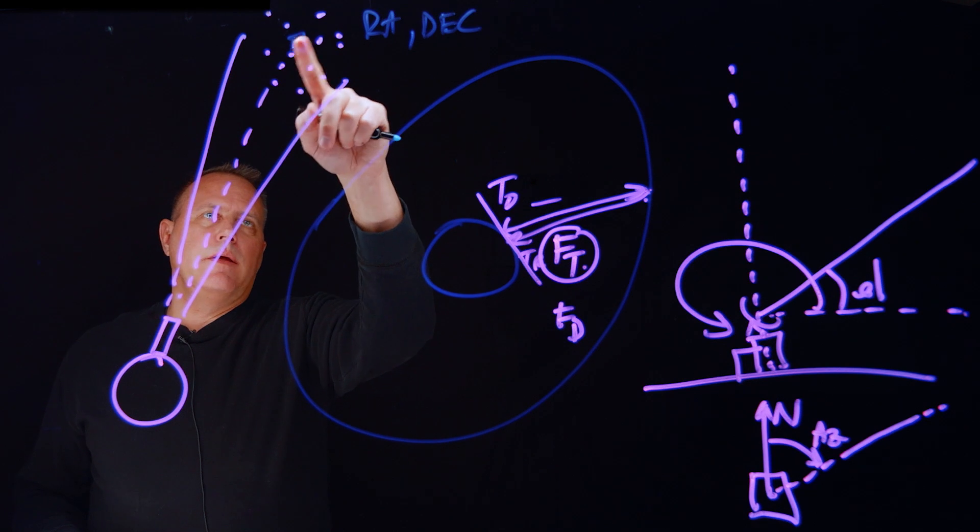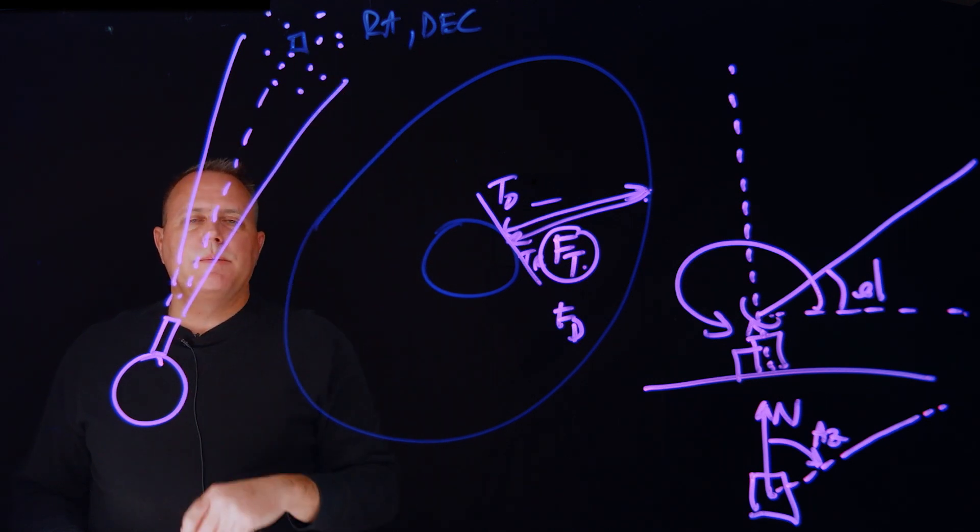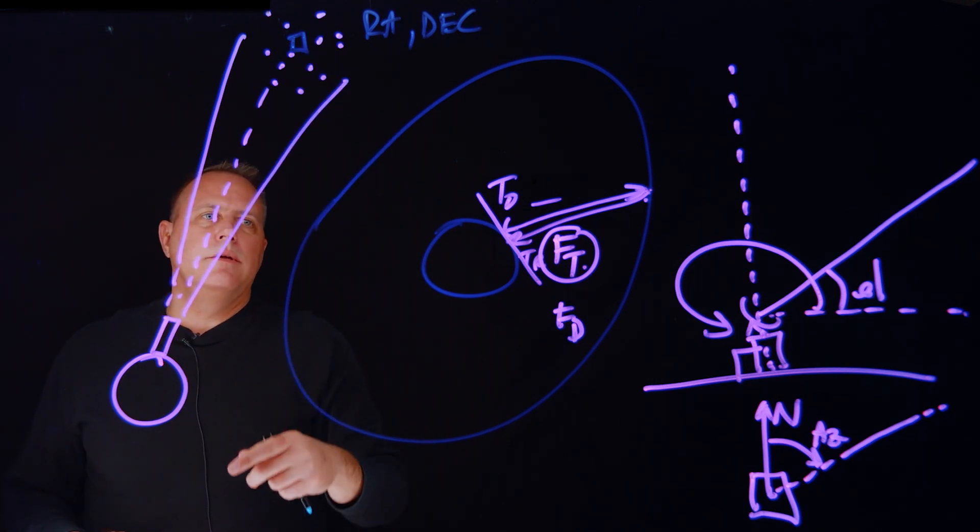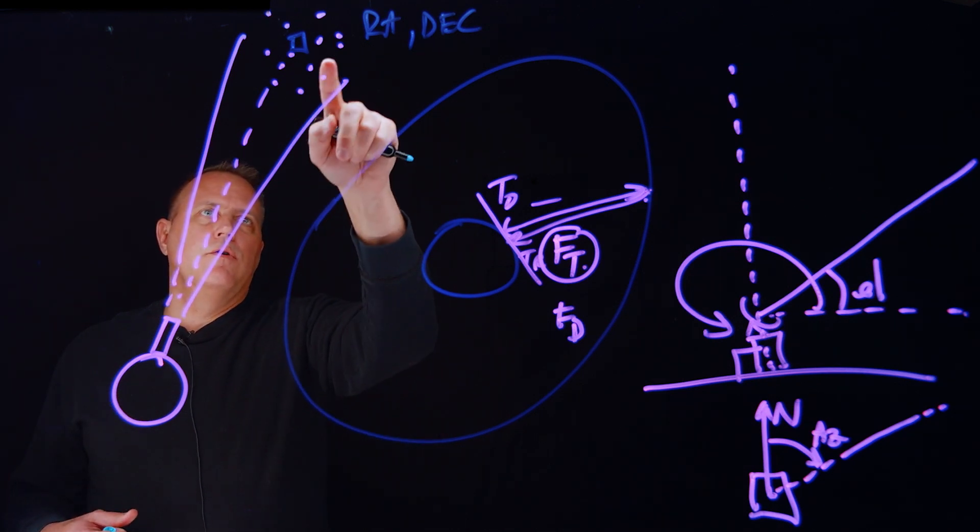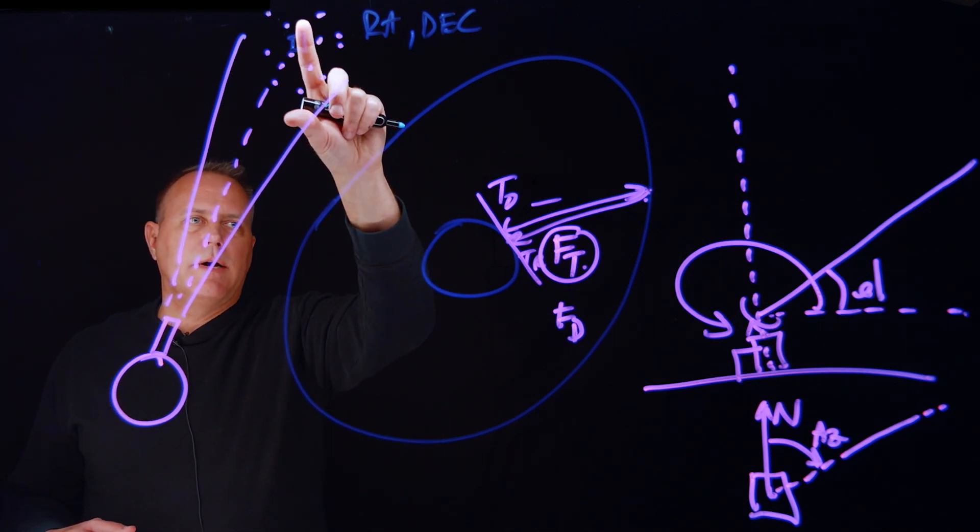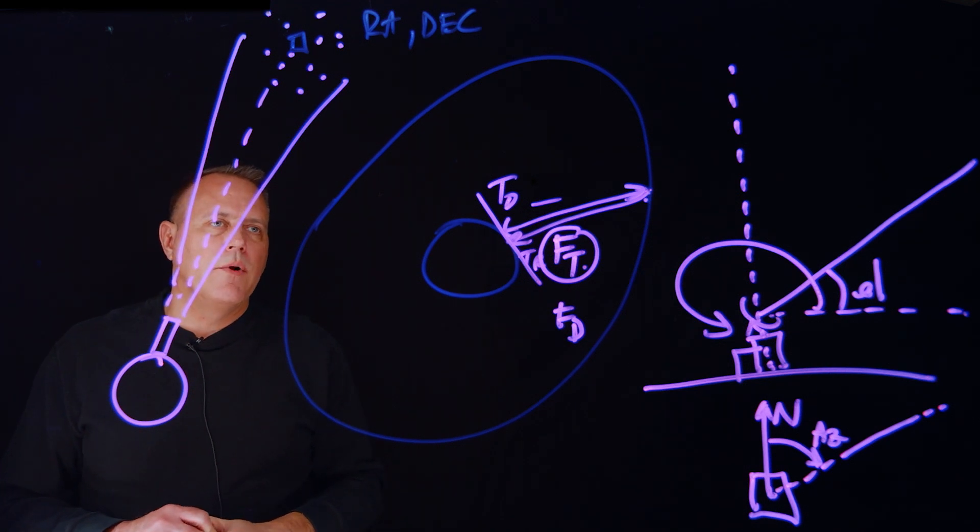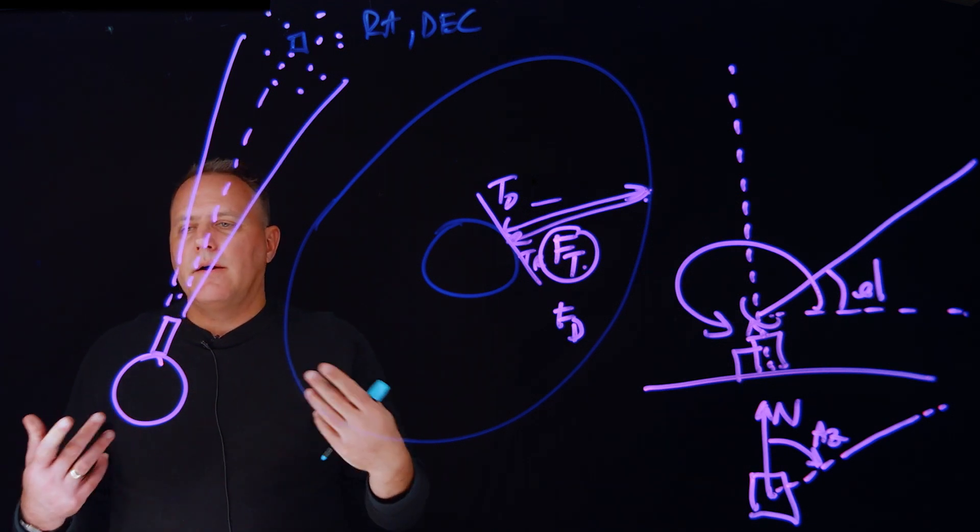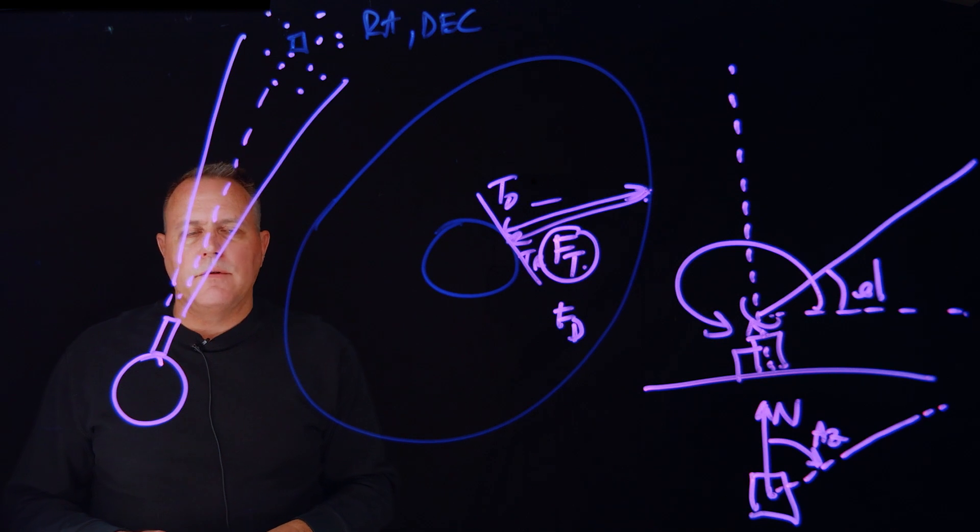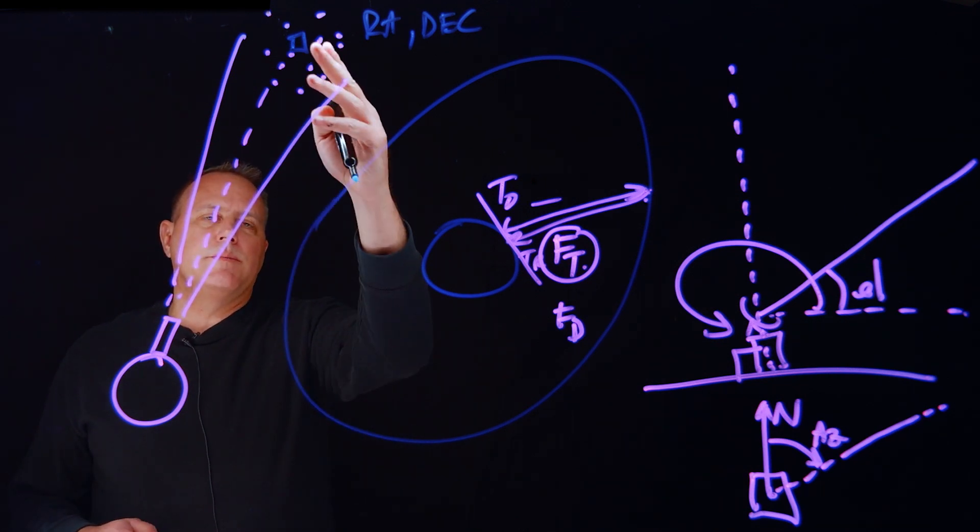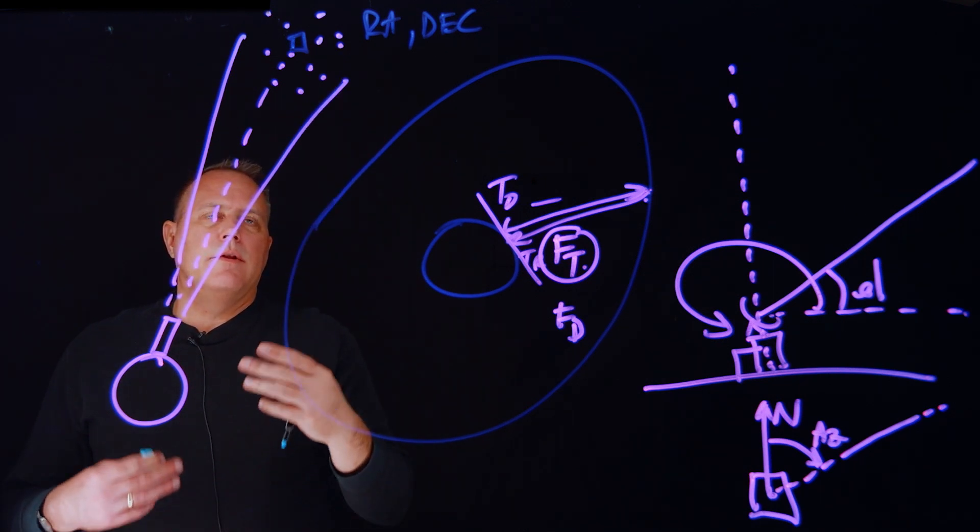And then when I see my other dot, which is my spacecraft, I can now essentially triangulate based on the known positions of the stars I do recognize, figure out the coordinates of my spacecraft relative to the stars, and I can now come up with the right ascension and declination of where my spacecraft is.